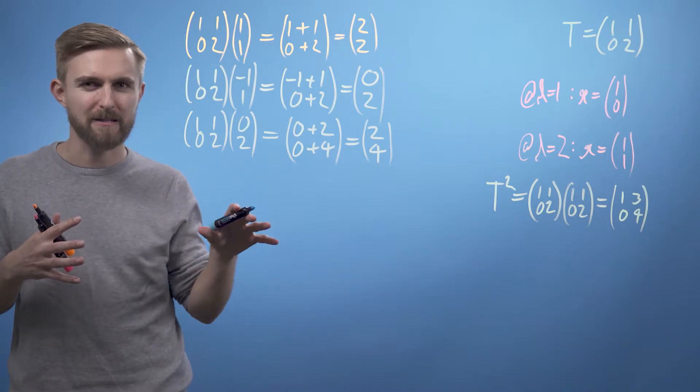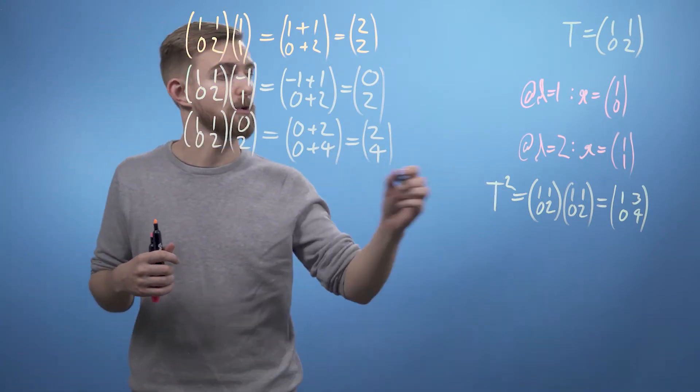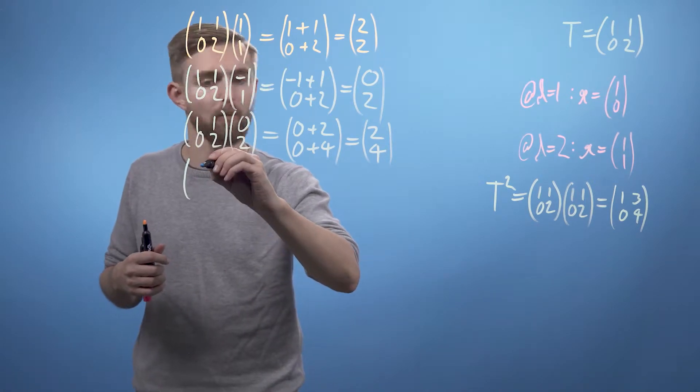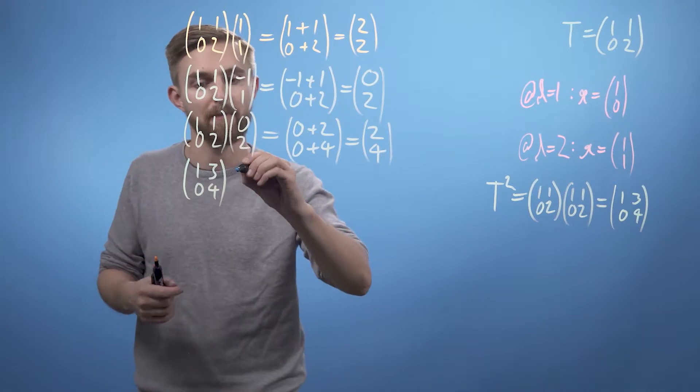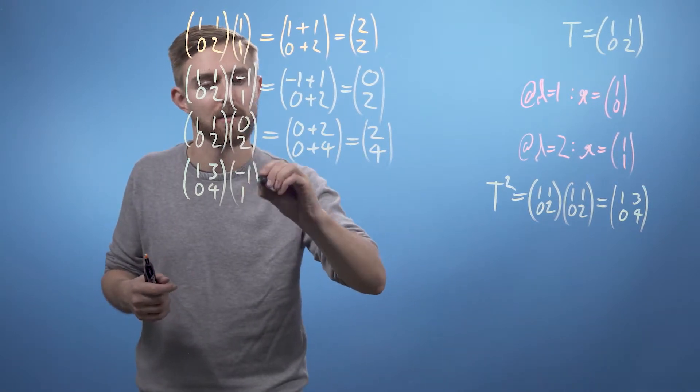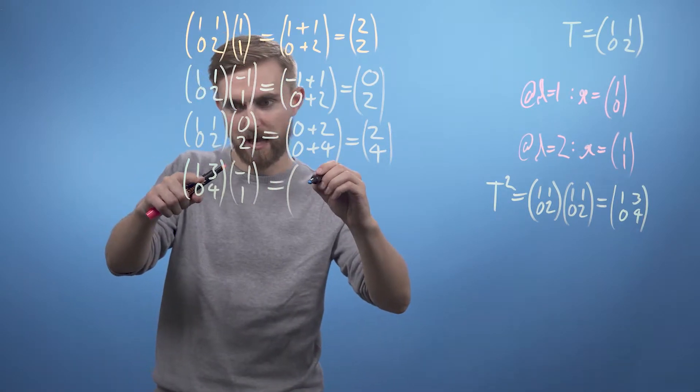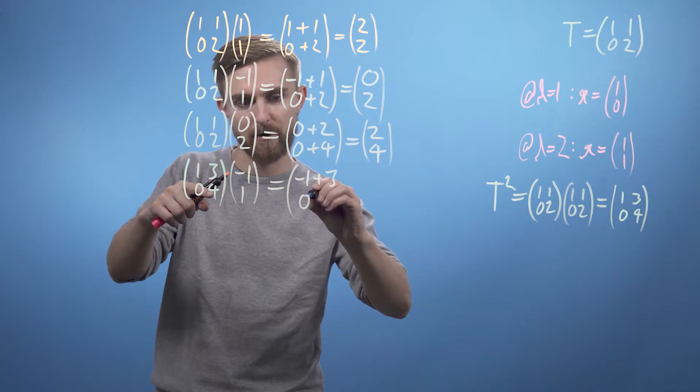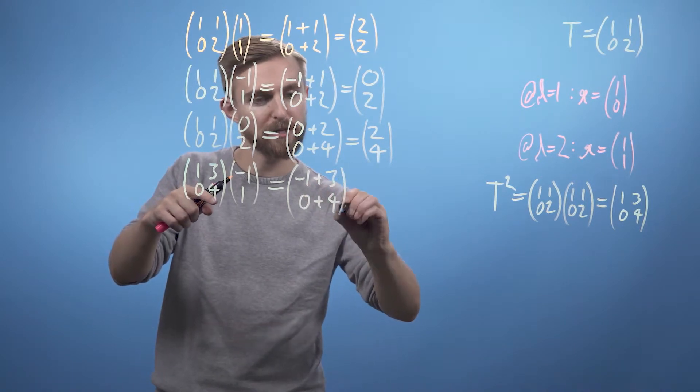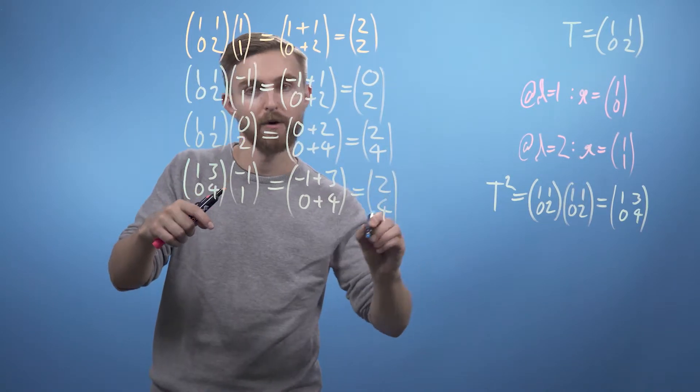Now we can apply this to our vector and see if we get the same result. So (1, 3; 0, 4) multiplied by (-1, 1) is going to equal rows times columns, so we're going to get -1 plus 3 and 0 plus 4, which of course equals (2, 4).